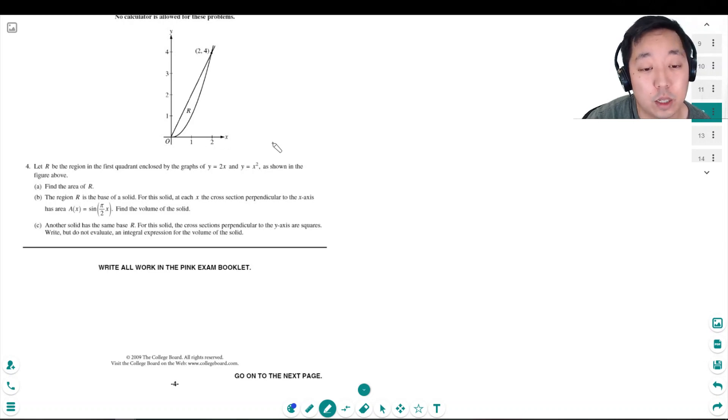We're on the non-calculator portion now, so I gotta do this all by hand. Let R be the region of the first quadrant enclosed by the graphs y equals 2x and y equals x squared shown in the figure above. Find the area of R.